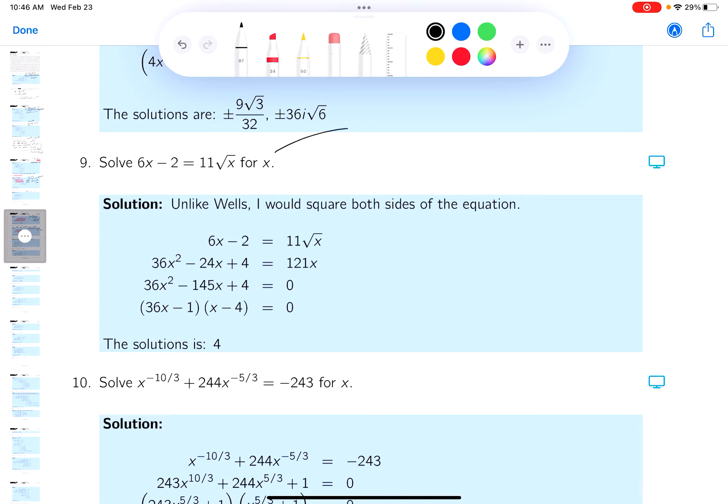And when you do that, you're going to get 36x² plus 4 minus 24x. On the right side, you can get 121x.